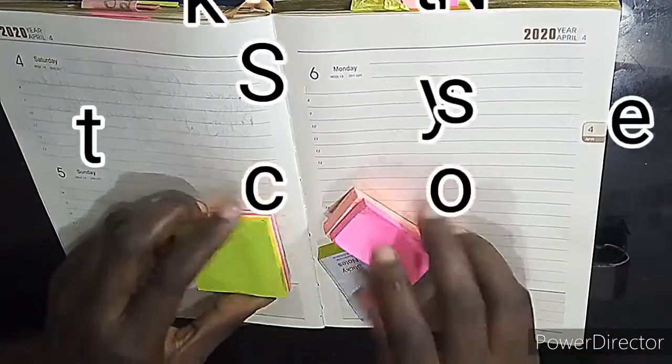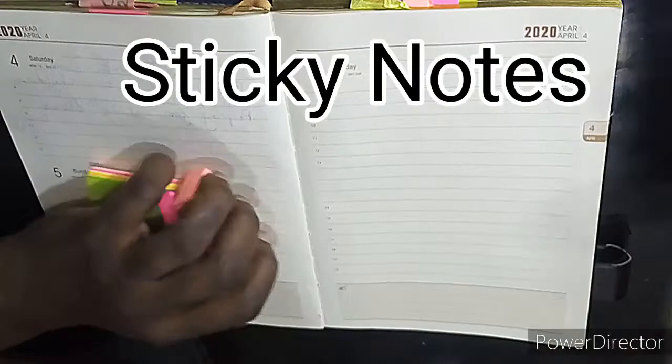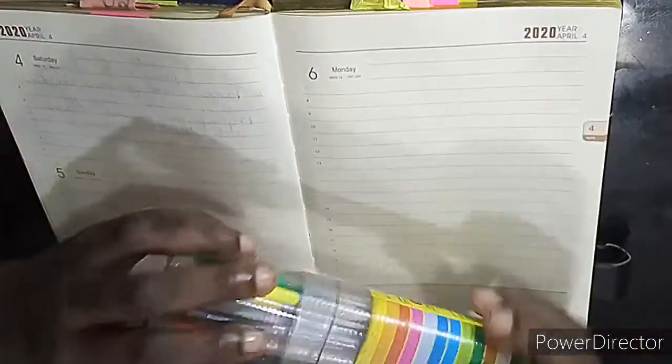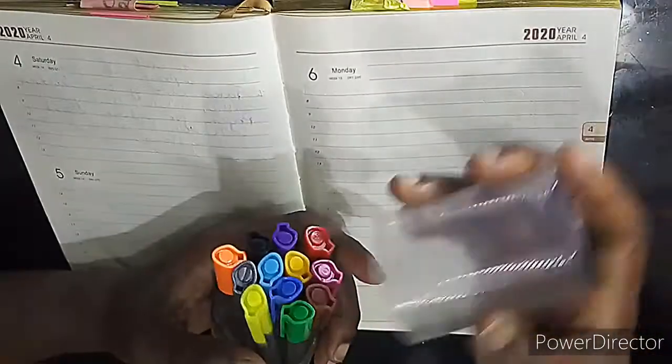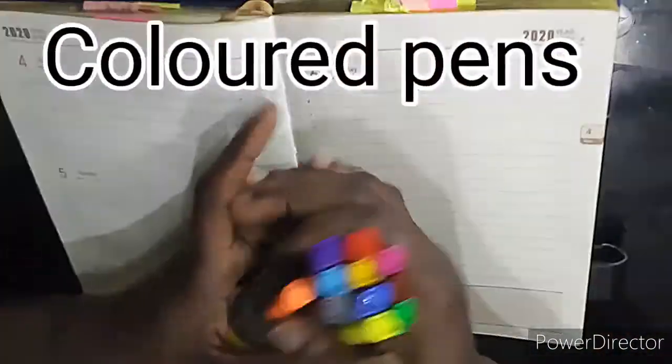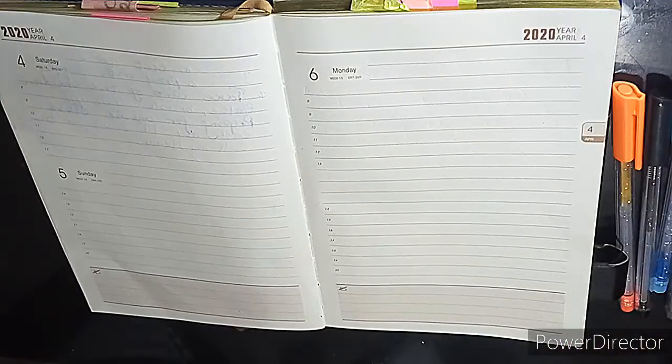I use sticky notes basically for important things that I do not want to miss out for the day. Then I use colored pens. So this is a 12-in-one colored pen that I have and I use it for my planner and other activities.